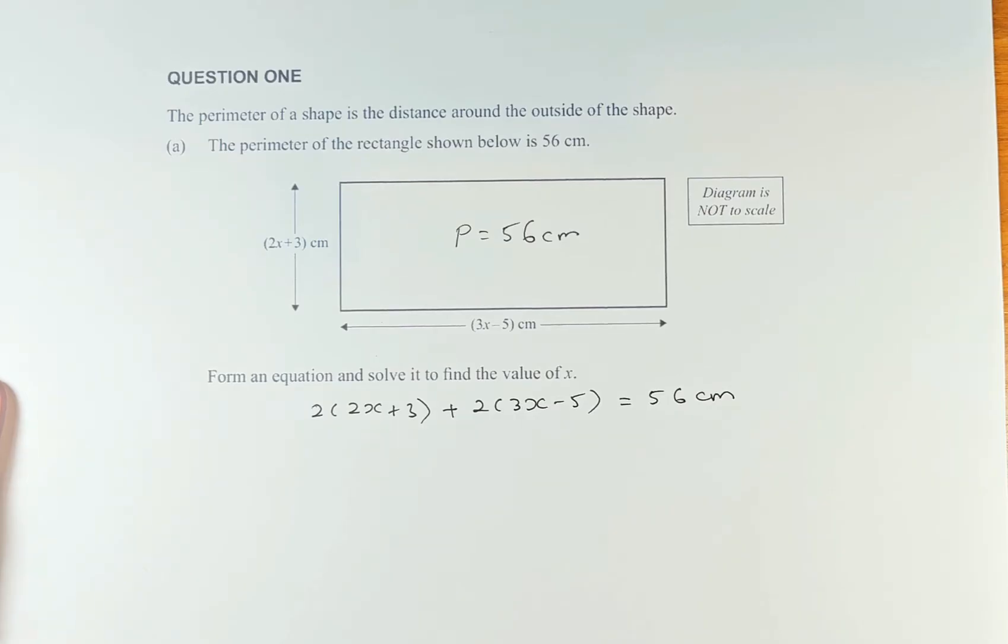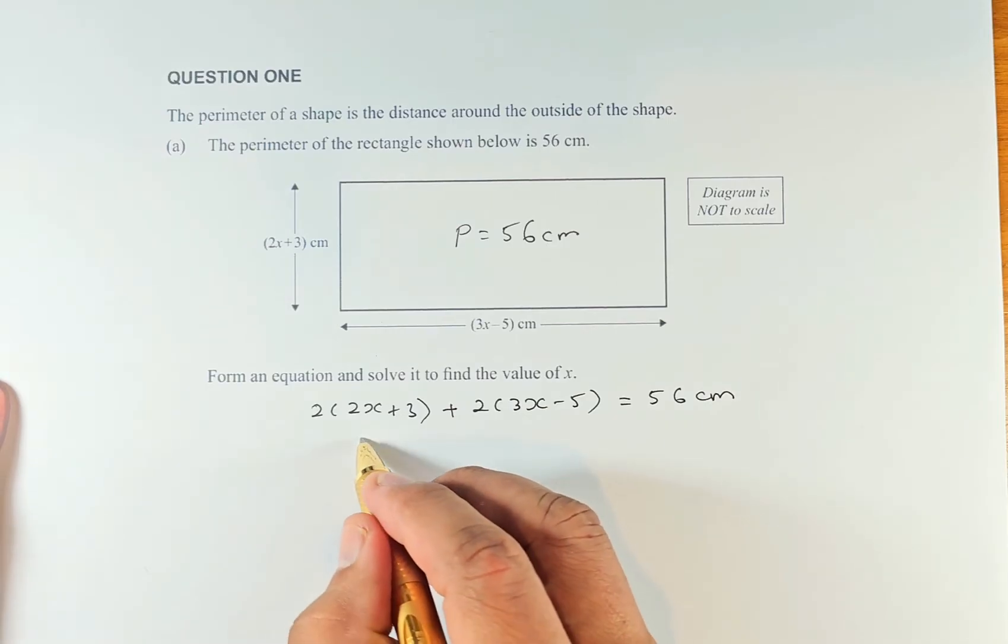Now we have formed the equation and the next step is to solve for x. You expand this: 2 times 2x is 4x, 2 times 3 is 6.